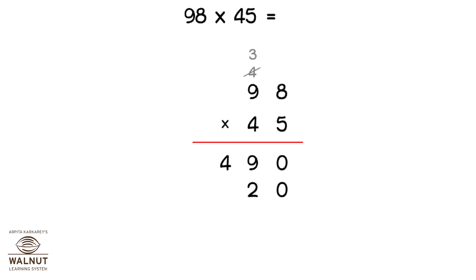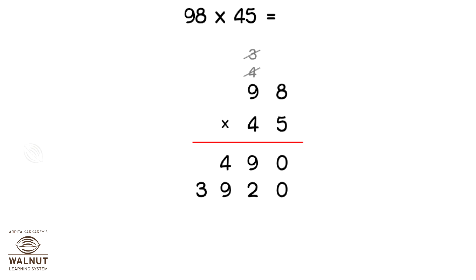Since there are no more digits to multiply, we write 39 below the line. Since we have already added the 3, we strike it out.